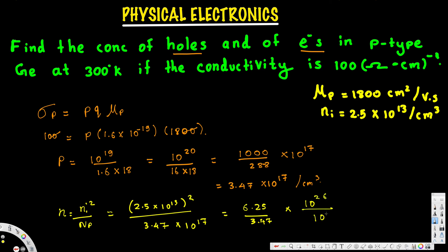Simplifying, we get approximately 1.8×10⁹ electrons per cm³. That is the minority carrier electron concentration. That's how we solve this type of problem — I hope this helps, thanks for watching.